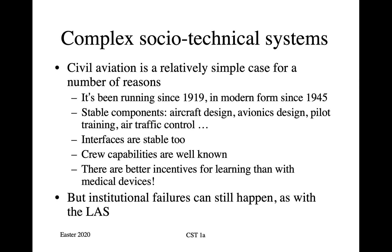Air crashes are different because then lots of people die at once — it's front-page news. It harms the airlines financially; it harms the aircraft vendors financially. And so that's one of the reasons why your risk of dying if you get on a scheduled airline flight is only about 1 in 12 million. But institutional failures can still happen, just as with the London Ambulance Service.